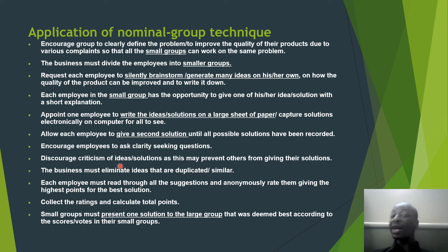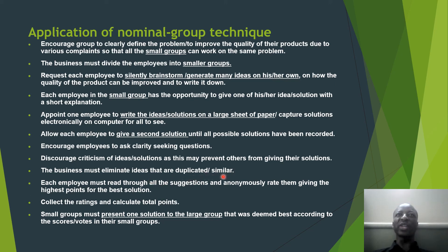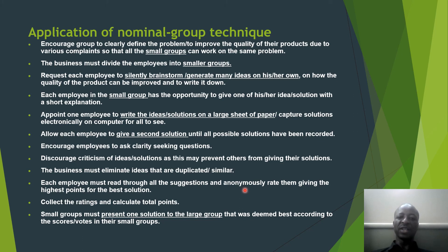Discourage criticism of ideas — do not allow other workers to criticize. Even if a point is weak, allow that person to contribute. The business must eliminate ideas that are duplicate or similar. Each employee must read through all suggestions and anonymously rate them, giving the highest points to the best solution. We mean you are voting secretly so that someone may not fear to criticize even a friend's idea.